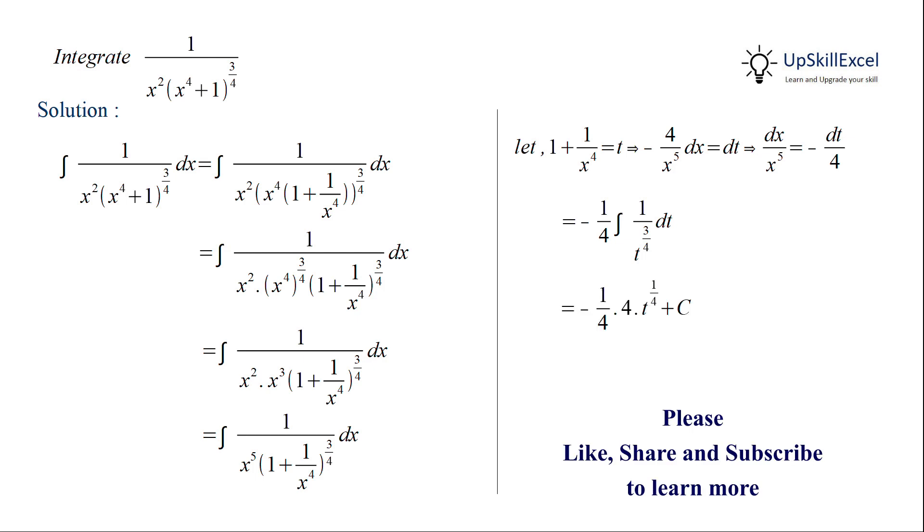We know that the integration of 1/t^(3/4) equals 4t^(1/4). The fours cancel, giving us -t^(1/4) + C.